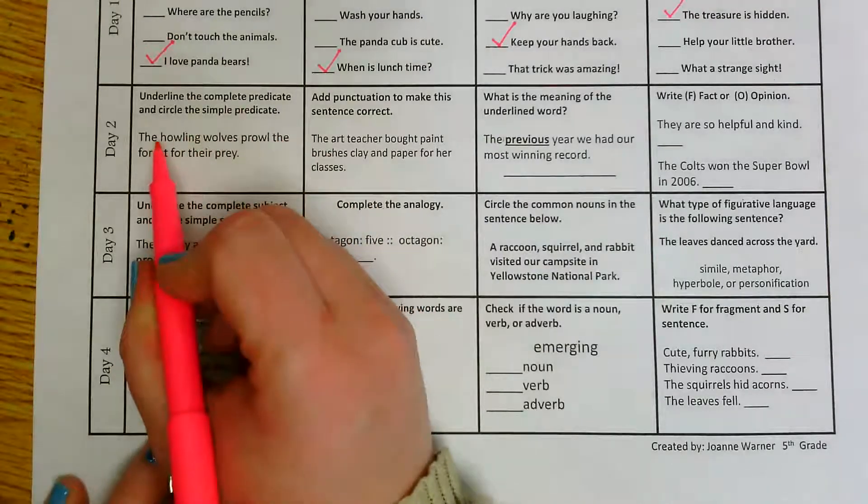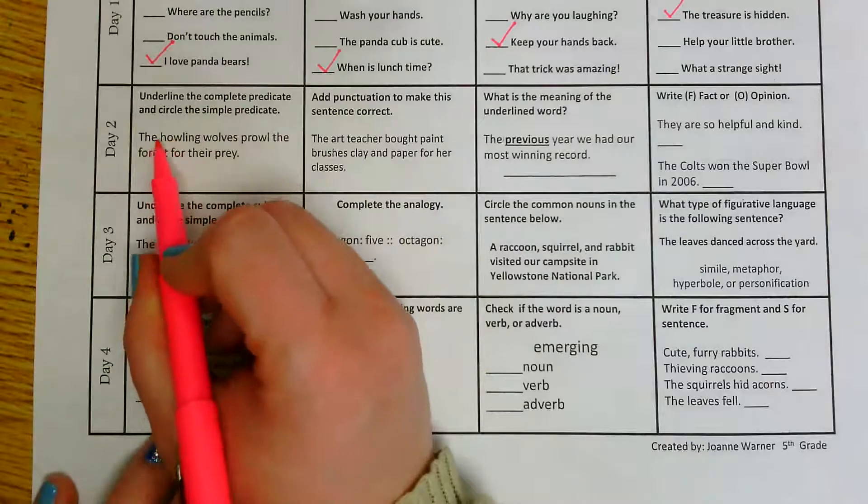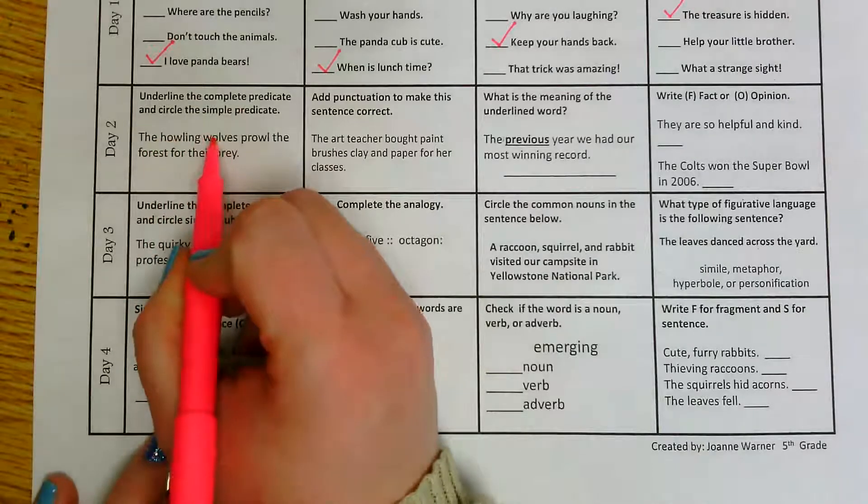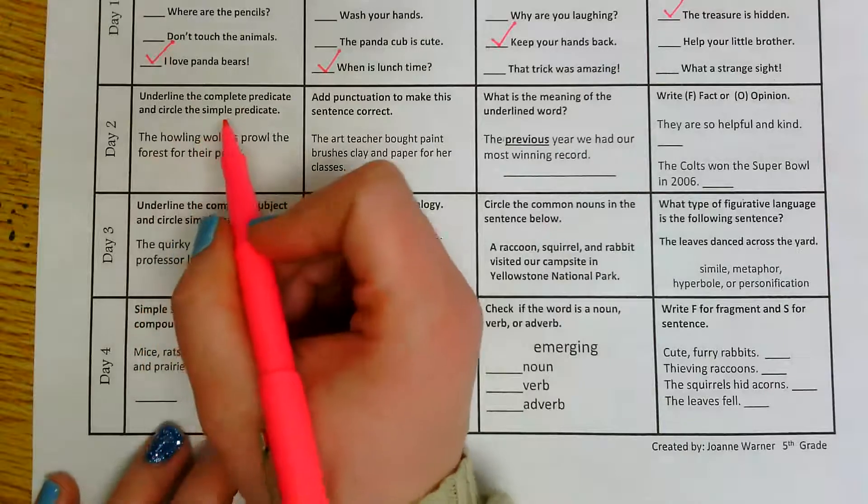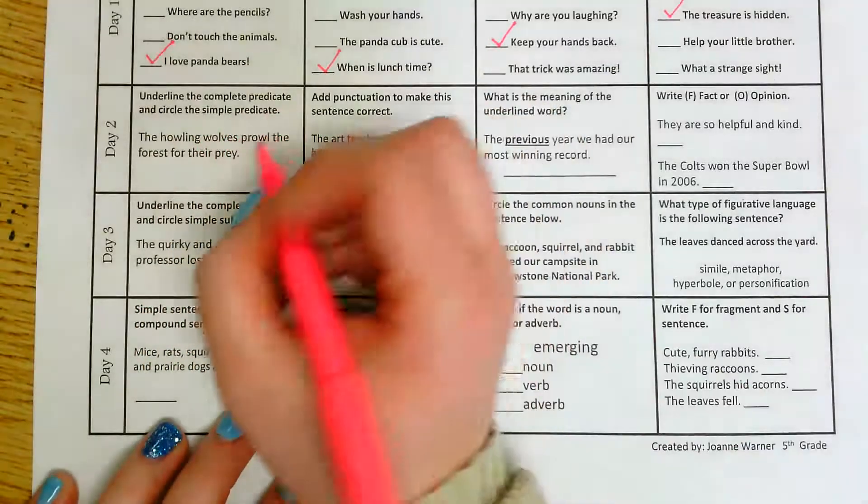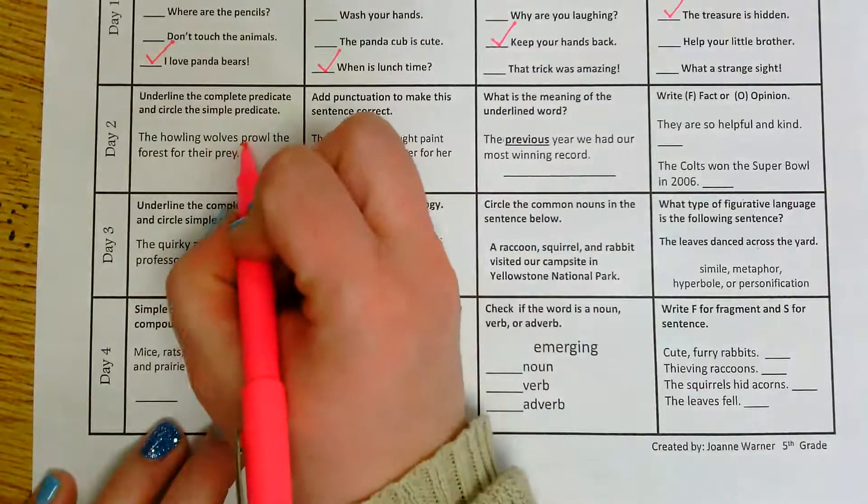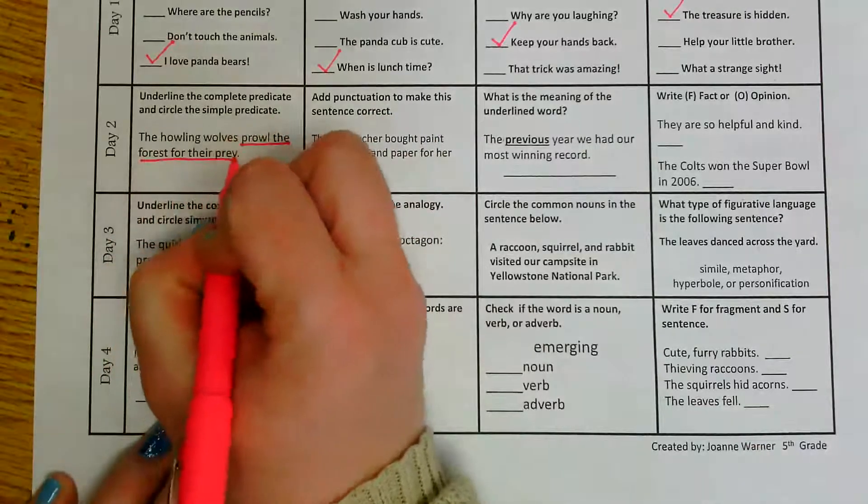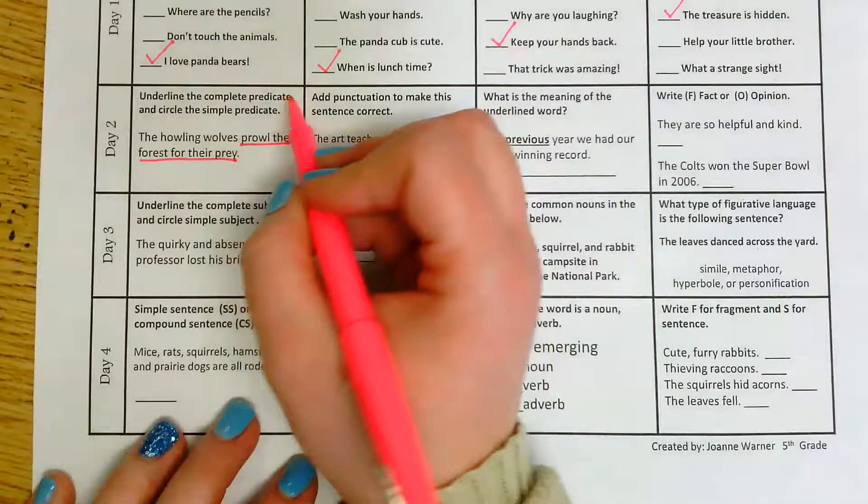Well, I know that the who or what that would be the main focus of my sentence would be the wolves. So I need to figure out what the wolves are doing in order to figure out what my predicate is. So I'm going to underline prowl the forest for their prey because that would be the complete predicate.